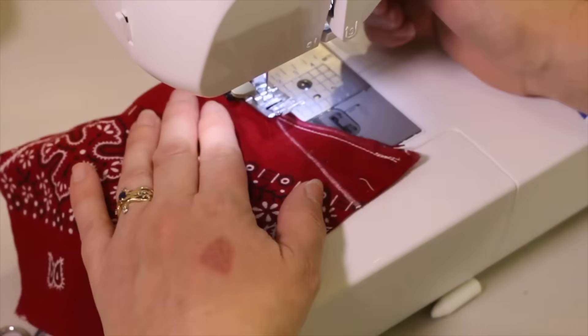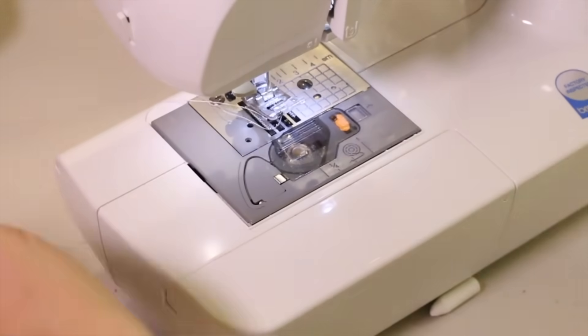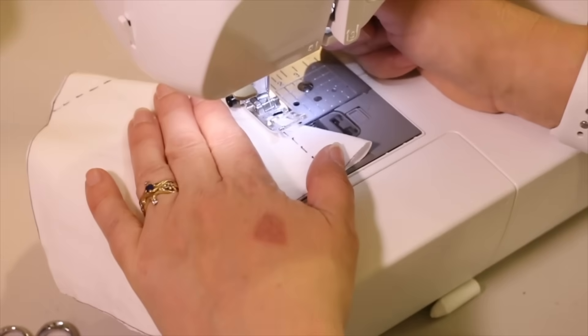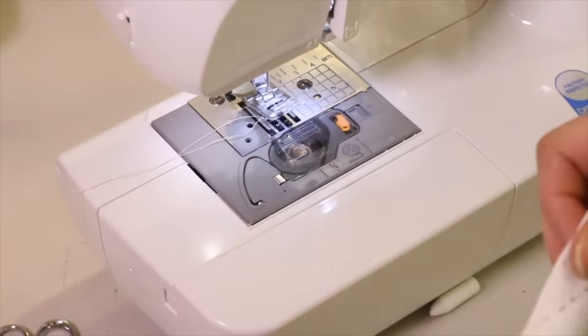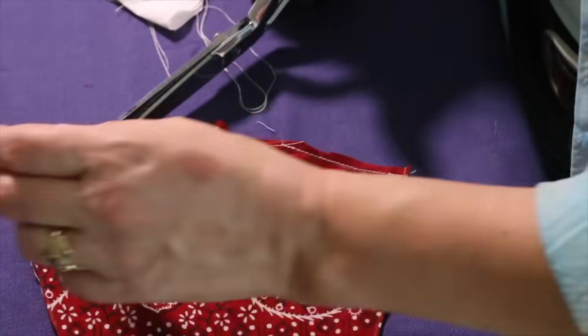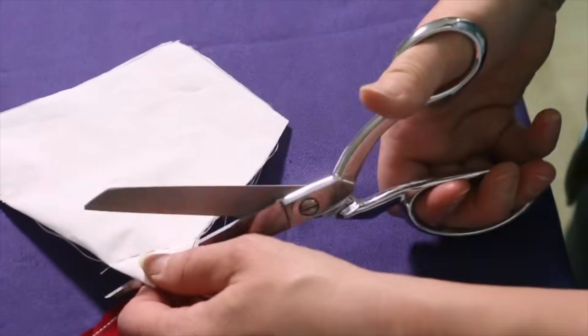Stitch along all the marked corners. If your fabric is printed, be sure your right sides are together. Now trim off the excess material at the corners, making sure to cut closely to the stitching.